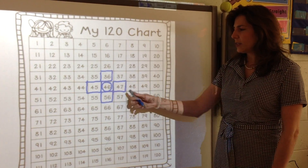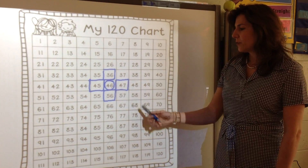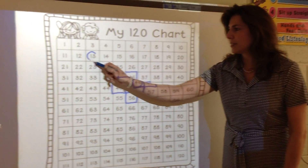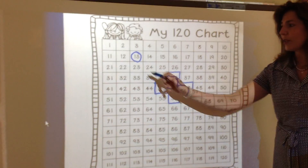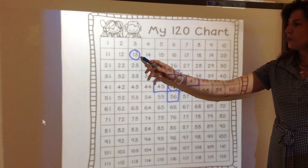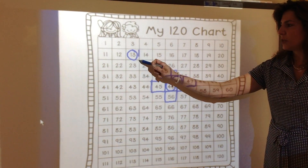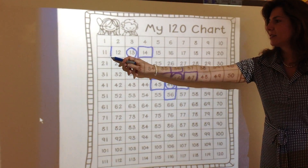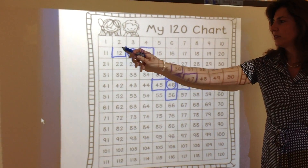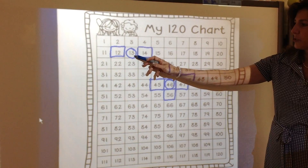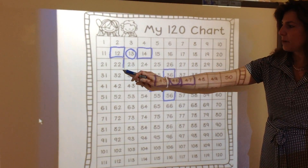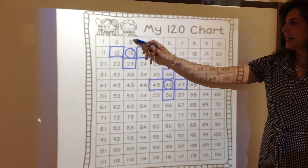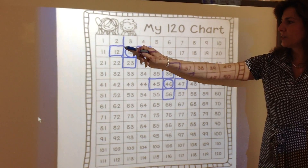And 1 more is 47. We call these the number neighbors. So the target number is circled. We'll move to 13 — 1 more, when we do 1 we're in the rows, is 14. While 1 less is 12. 10 more than 13, we're just adding 1 more 10, coming down, is 23. And 10 less is 3.